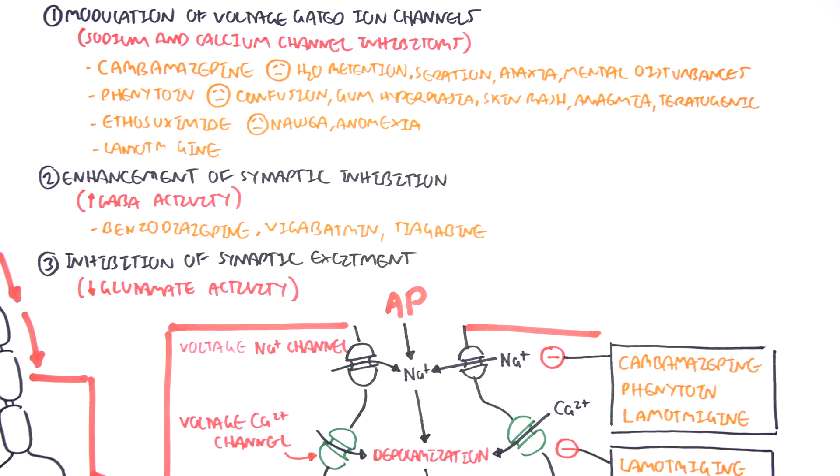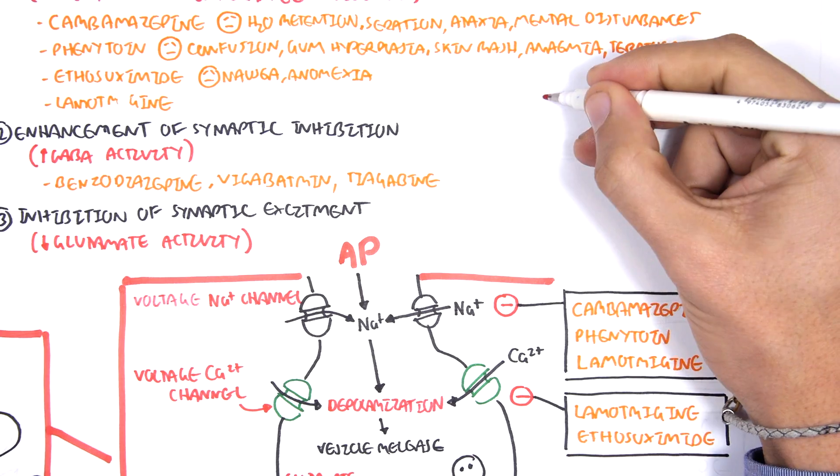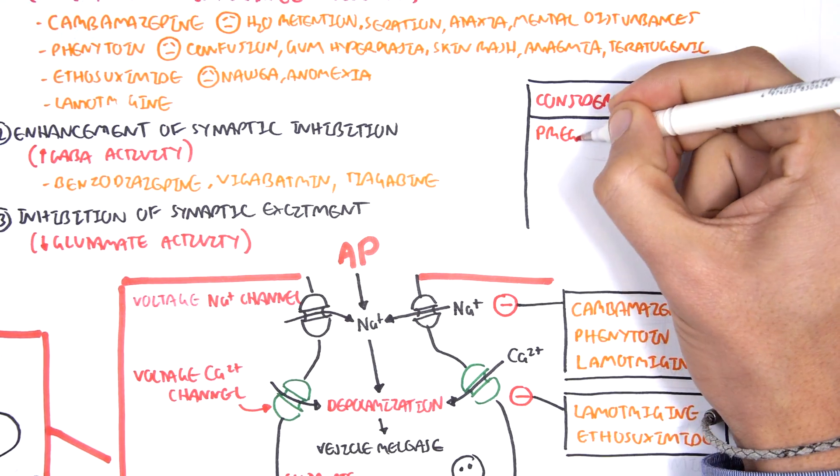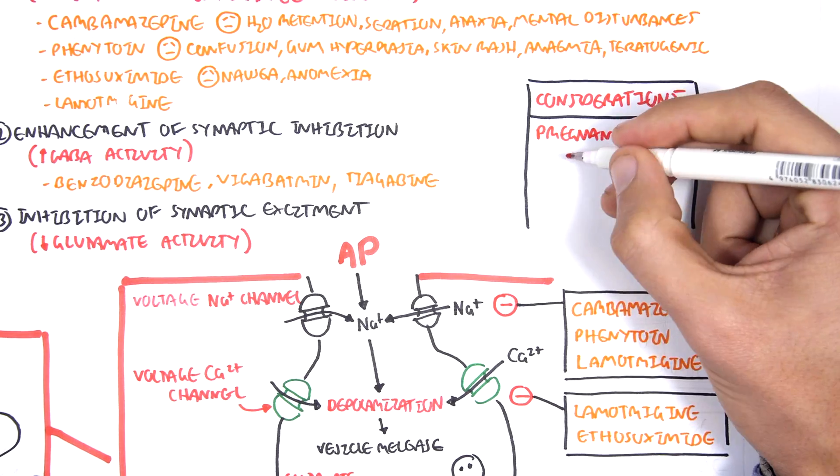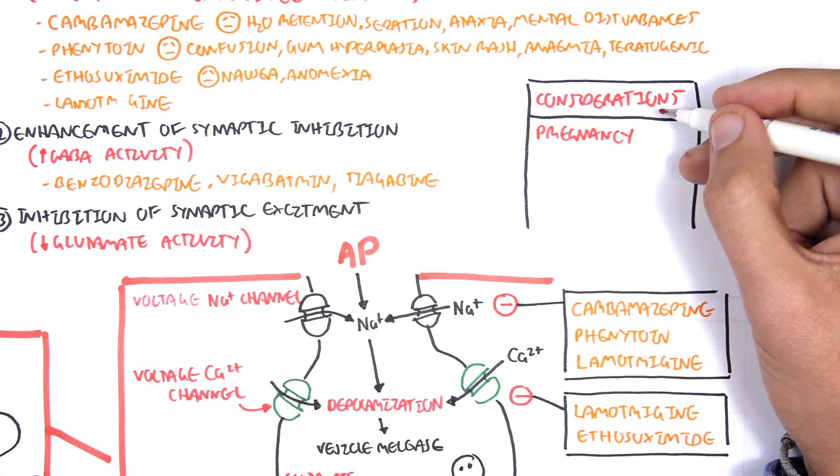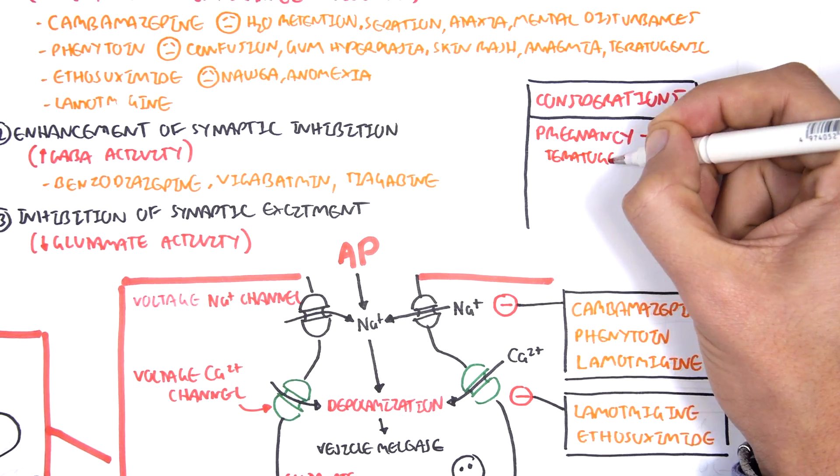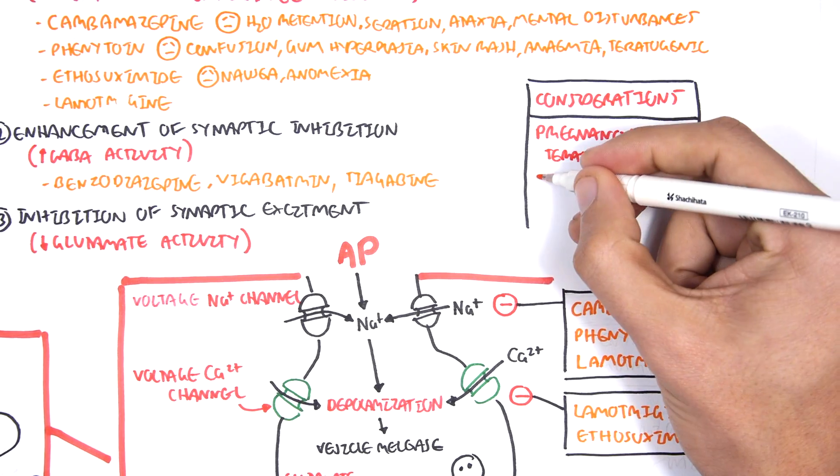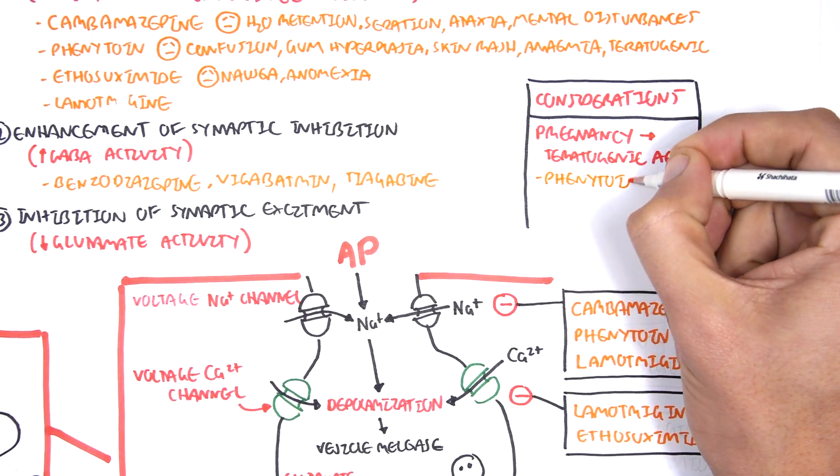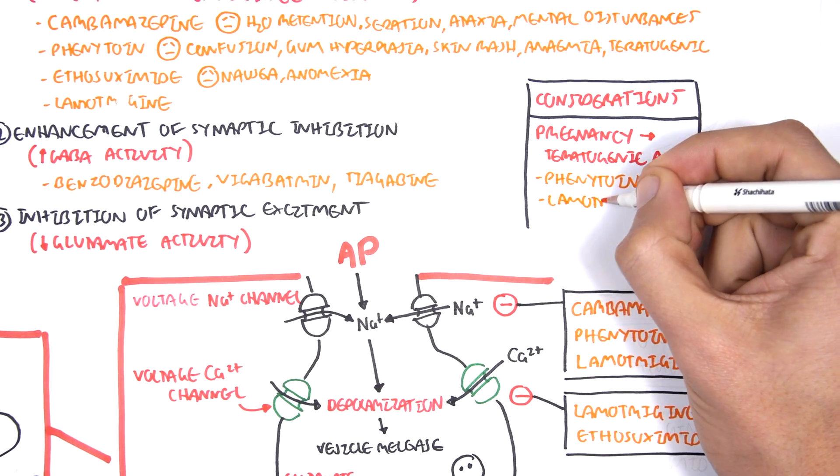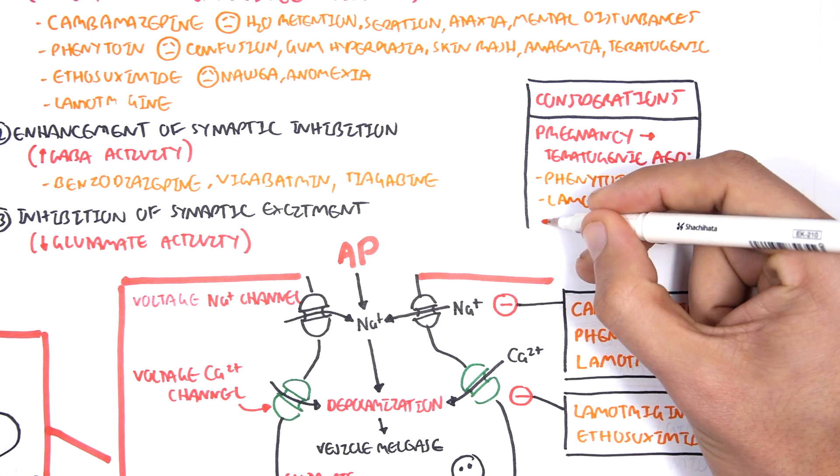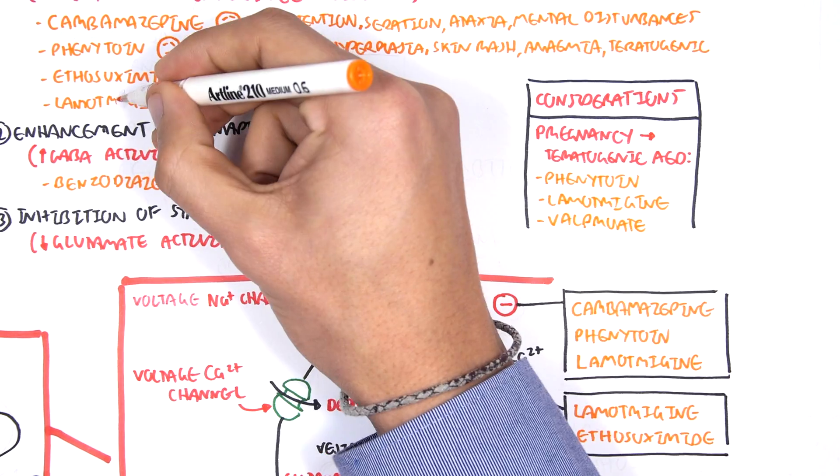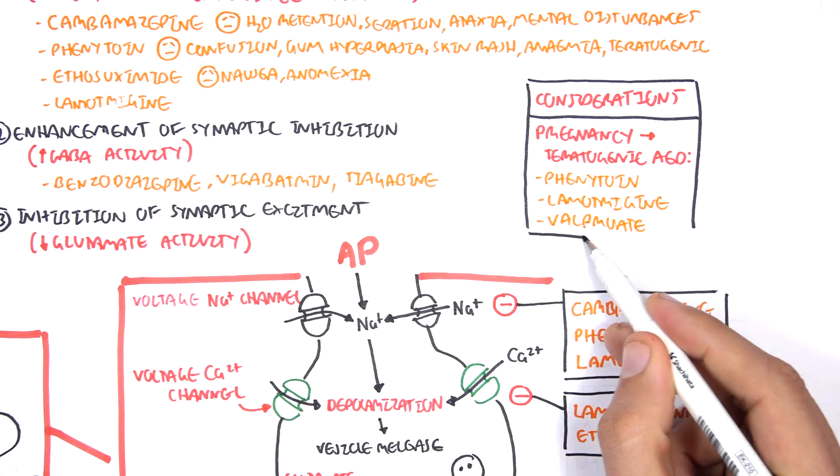Some important considerations: in pregnancy, anti-epileptics are not very safe. Teratogenic anti-epileptic drugs include phenytoin, lamotrigine, and valproate. However, it's been shown that lamotrigine is probably the most safest out of the lot for people who are pregnant.